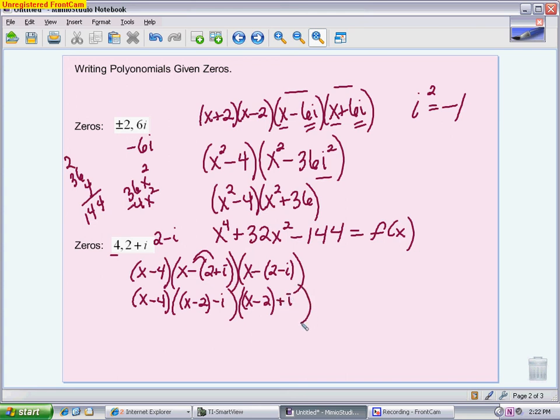Now when I FOIL this together, I'm going to multiply the x minus 2 times the x minus 2. That is x squared minus 4x plus 4. I don't have to do the outer and inner again because they will cancel. Now I'm going to do the negative i times the positive i. I get negative i squared. That should be replaced with 1, because i squared is negative 1. You're doing a minus minus 1, so this should actually be x squared minus 4x plus 5.